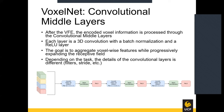After the voxel feature encoding layer, the encoded voxel information is processed through the convolutional middle layers. Each layer is a 3D convolution with batch normalization and a ReLU layer. The goal is to aggregate voxel-wise features while progressively expanding the receptive field of the network. Depending on the task, the details of the convolutional layers differ, including filters, stride, and padding. For the car detection task, the layers have the same number of filters and stride, but different padding, and this differs again for pedestrian and cyclist detection.